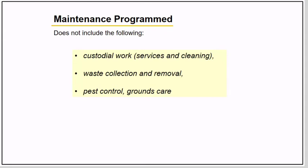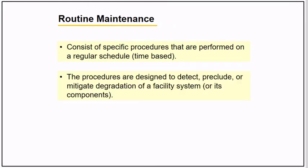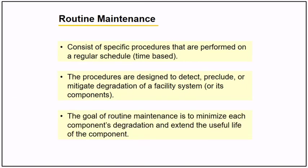For routine maintenance, it consists of specific procedures that are performed on a regular schedule. These procedures are designed to detect, preclude, or mitigate degradation of facility systems. The goal of routine maintenance is to minimize degradation and extend the useful life of an asset.